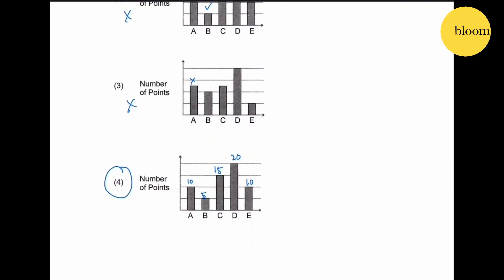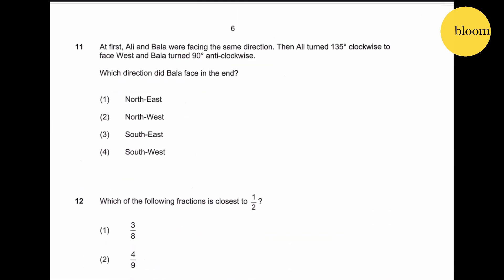Question 11: at first Ali and Bala were facing the same direction. When Ali turned 135 degree clockwise to face west and Bala turned 90 degree anti-clockwise, which direction did Bala face in the end? Let's draw north, south, east, west.